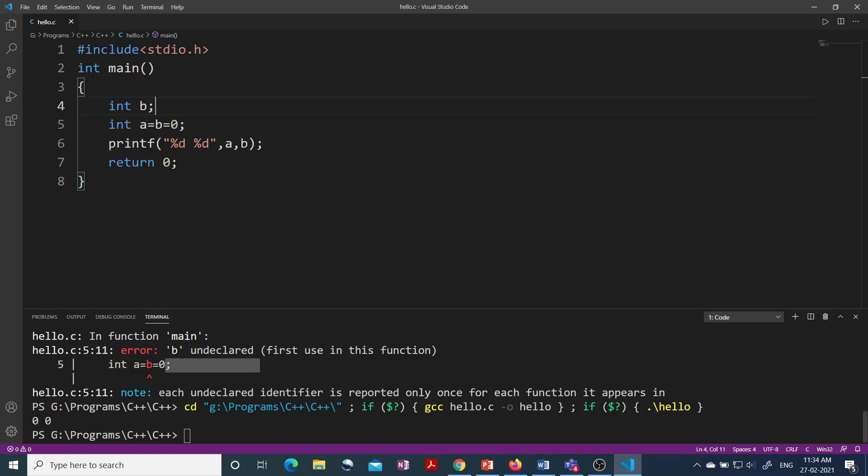So now here you can see you are not getting any compile time error and you are getting answer as 0 0. That means a and b both are getting initialized with 0.